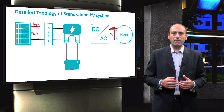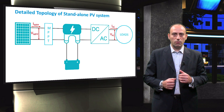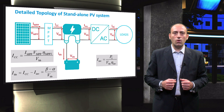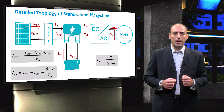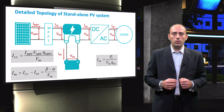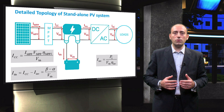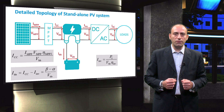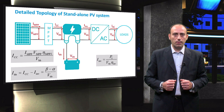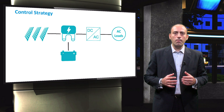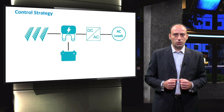First, we derived the expressions to calculate some important electrical parameters of the PV system. Those are the current entering the charge controller, current leaving the charge controller and entering the inverter, and the current voltage of the battery bank. All this was followed by accurately sizing the different components of the PV system. In the next step, you are going to implement a control strategy mimicking the functions of the charge controller.